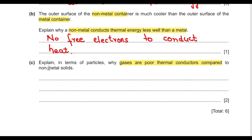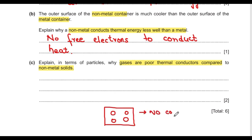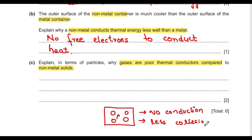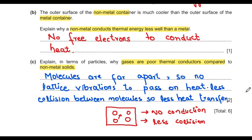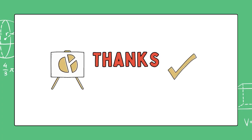Part c: explain why gases are poor thermal conductors compared to metals. In gases, particles are far apart so there is no lattice vibration to pass on heat. Particles also collide with each other much less often, so less heat is transferred through collision.